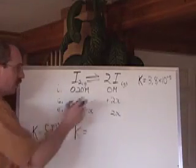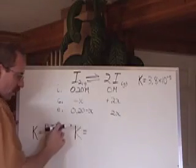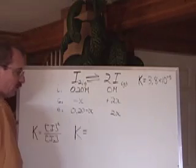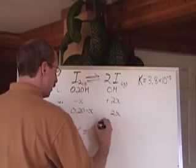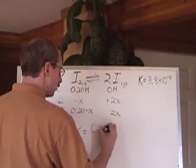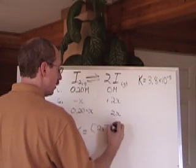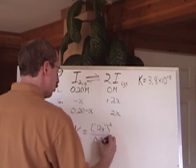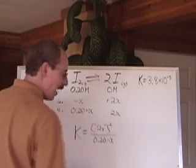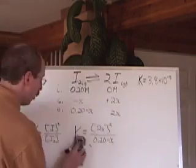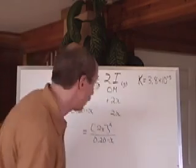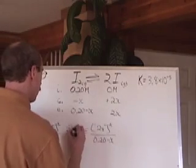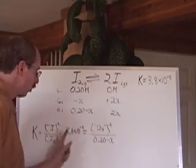Plug it into the expression, here's the expression: I squared divided by the I2. The K is going to be 2x, and it's going to be squared, divided by 0.20 minus x. And we know what that K value is, so we don't even write K, we just write 3.8 times 10 to the negative 5.